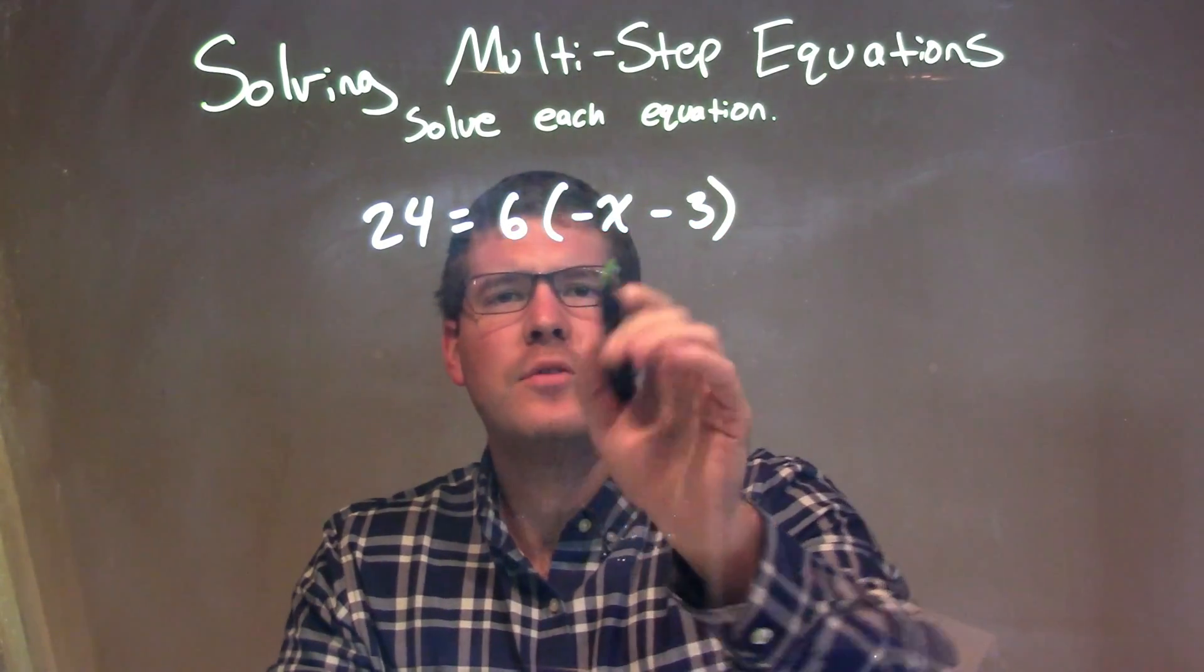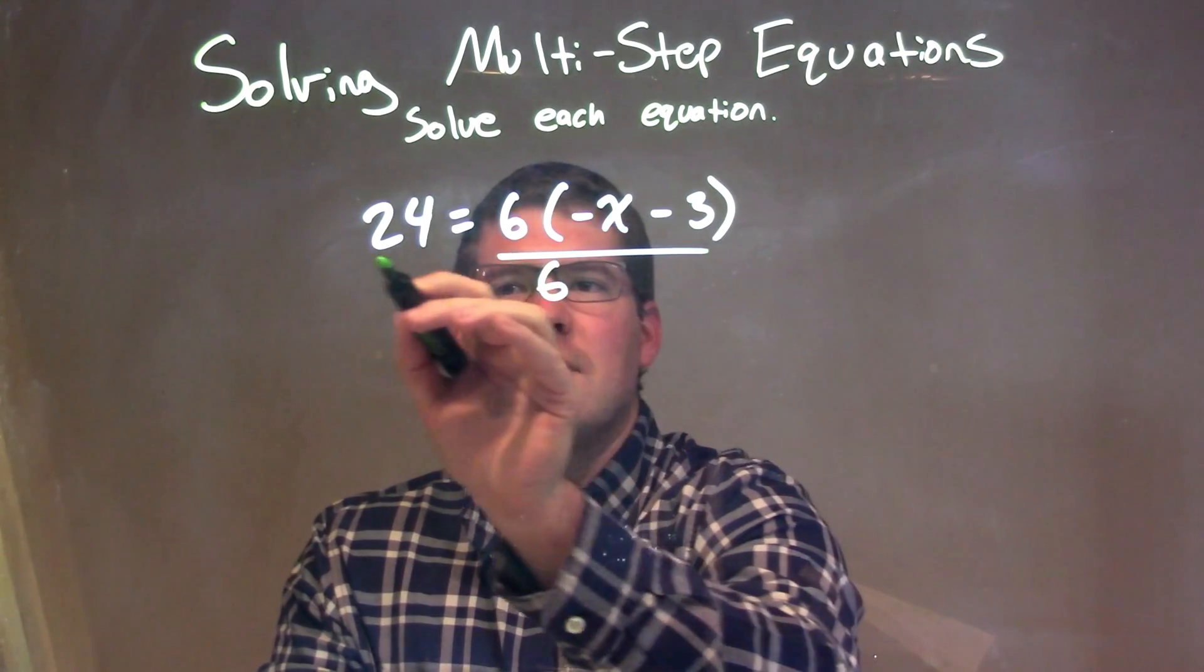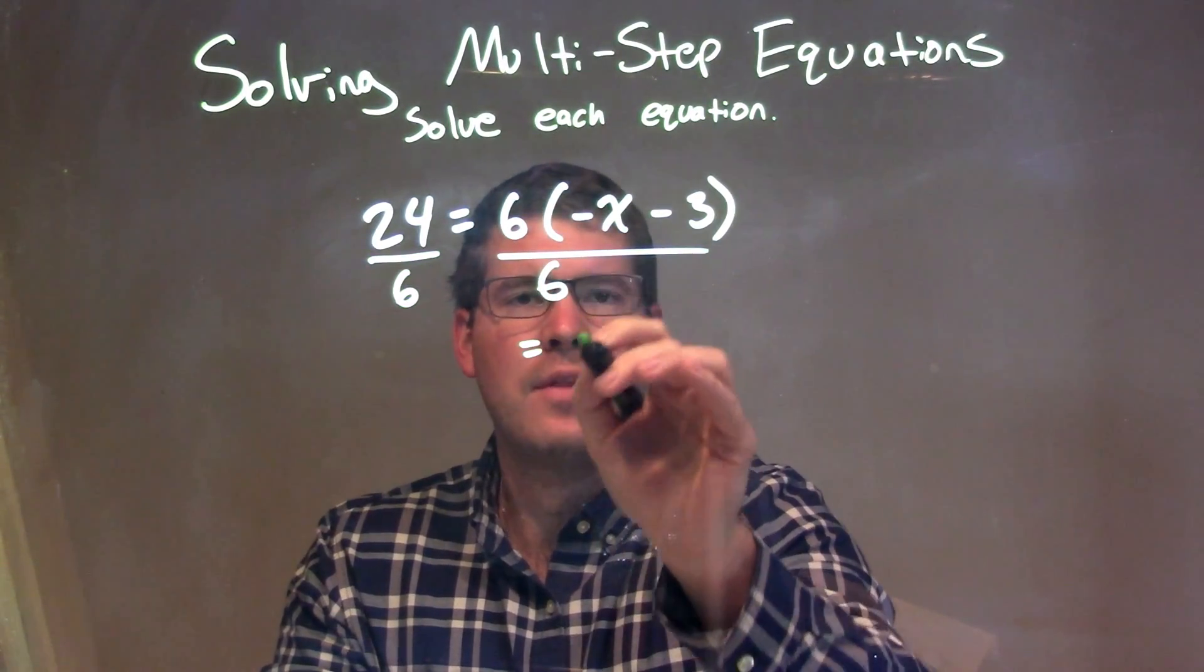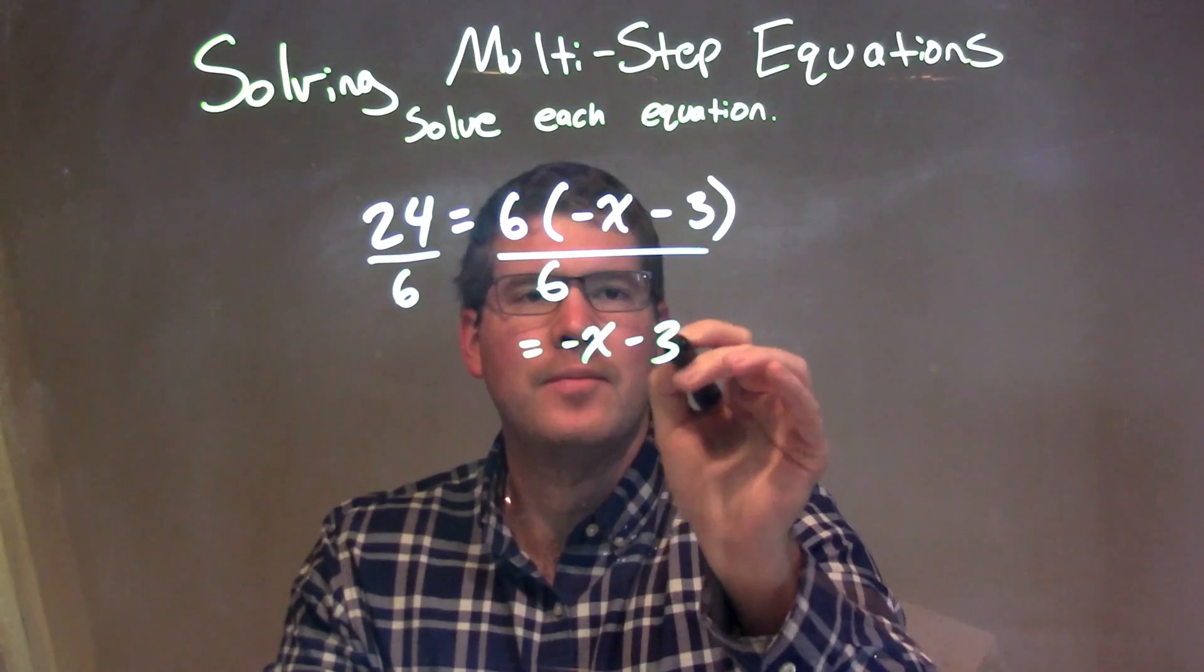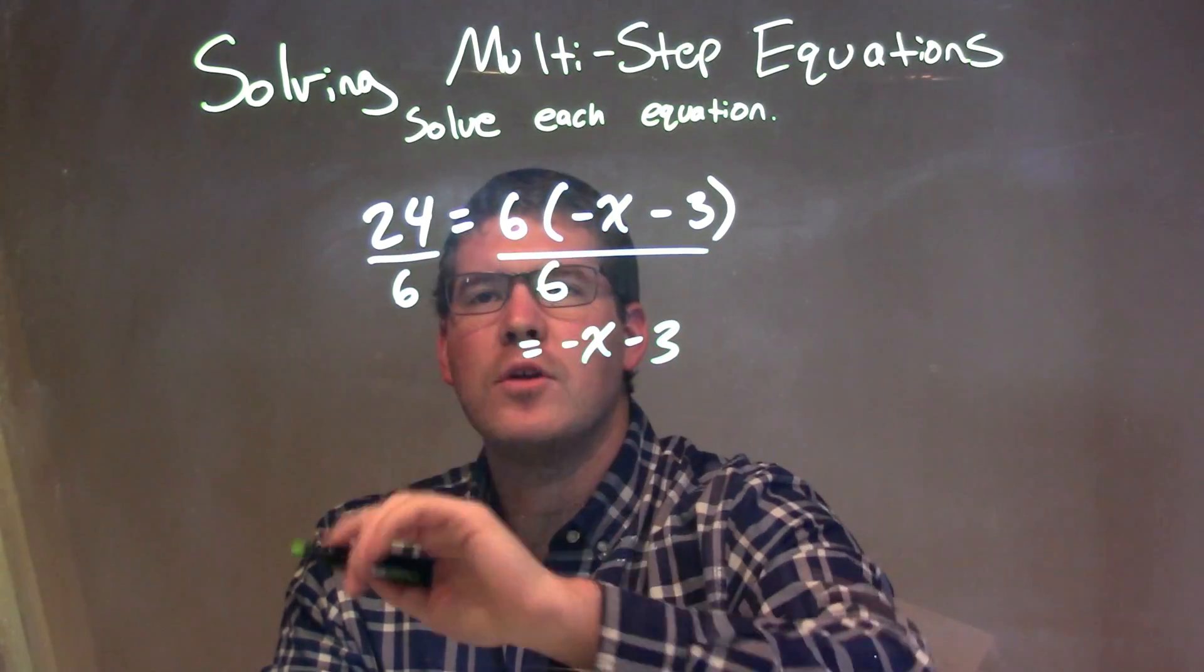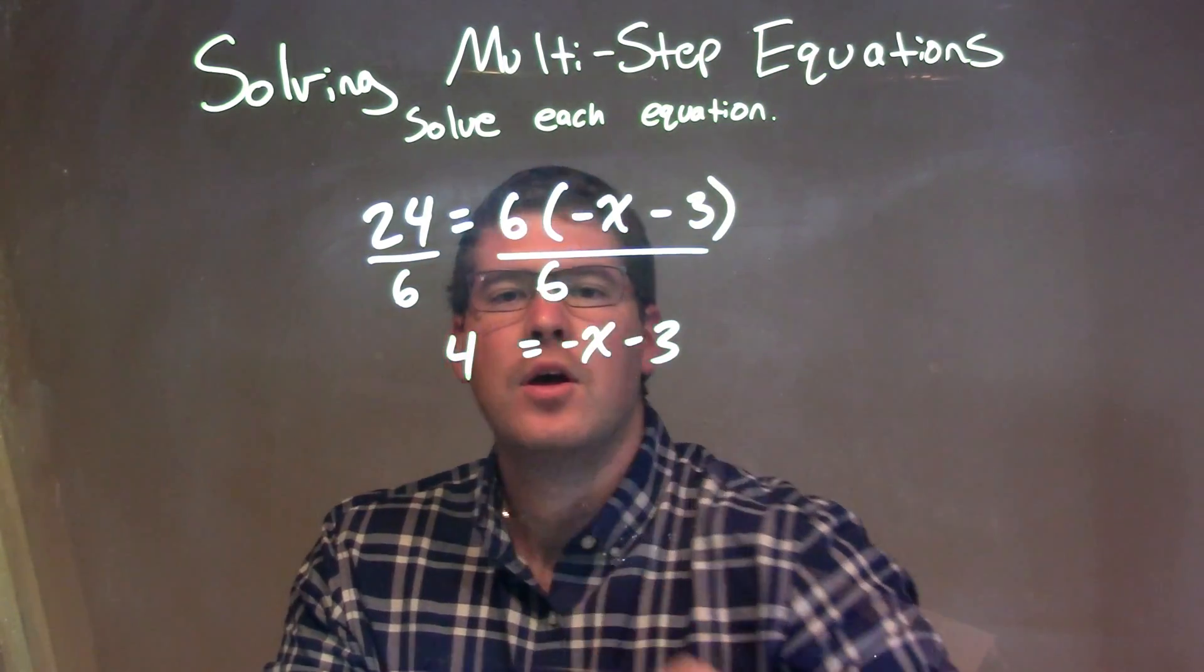So, what I'm going to do is divide by 6 on both sides. By doing that, I'm leaving what's in the parentheses, negative x minus 3, and then 24 divided by 6 gives me 4 on the left.